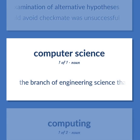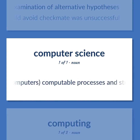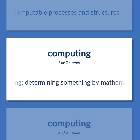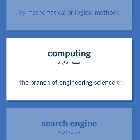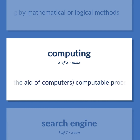The branch of engineering science that studies, with the aid of computers, computable processes and structures. The procedure of calculating. Determining something by mathematical or logical methods. The branch of engineering science that studies, with the aid of computers, computable processes and structures.